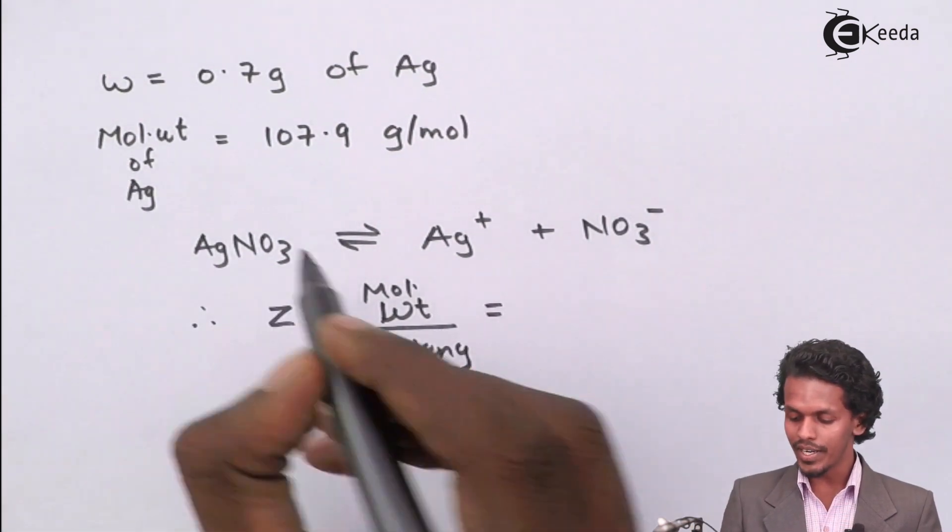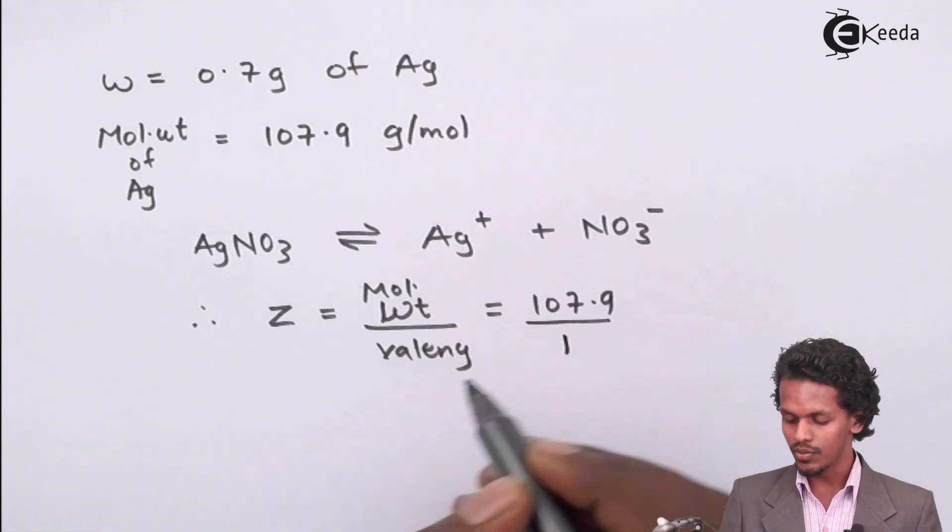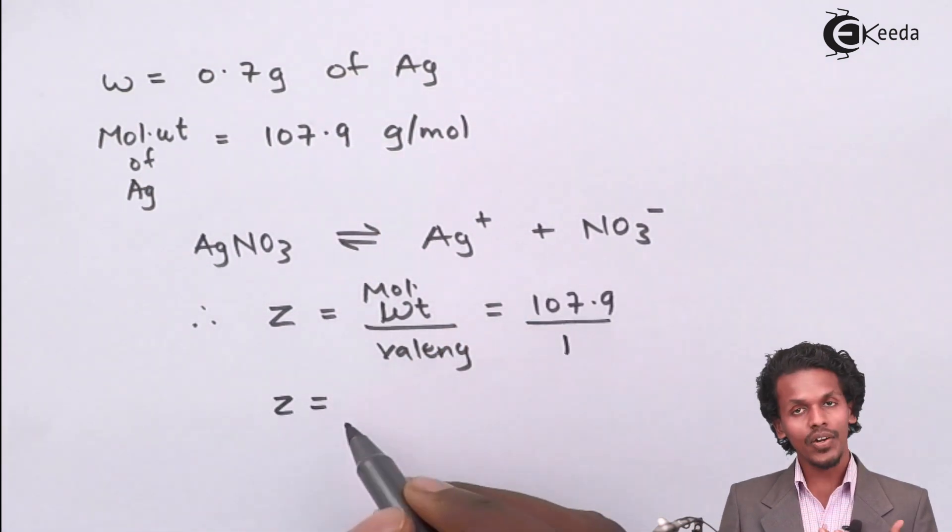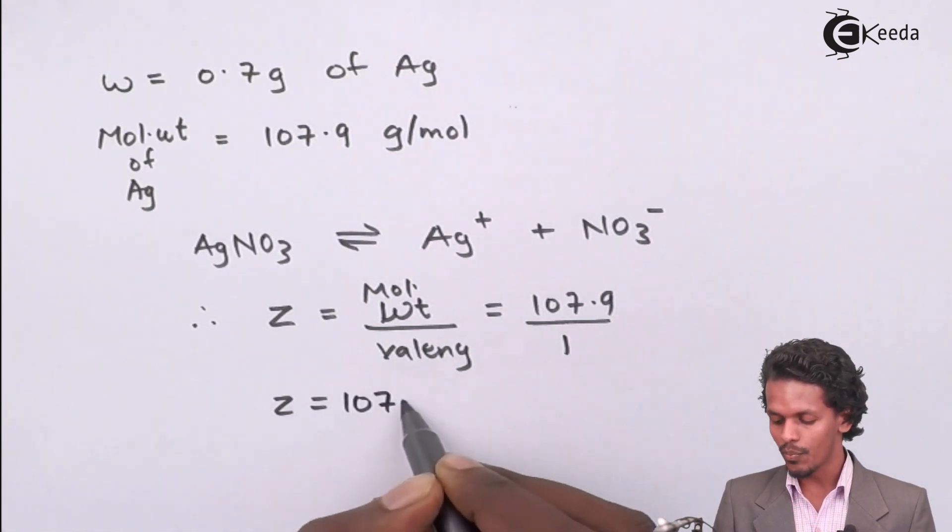The molecular weight is provided as 107.9 and the valency is 1. Therefore, z, that is equivalent weight for silver in this case, will be 107.9.